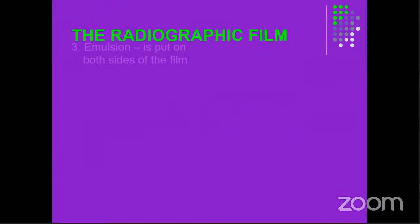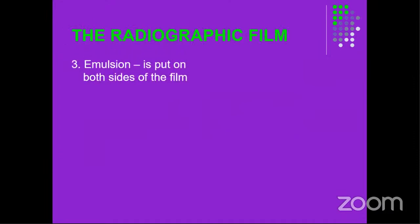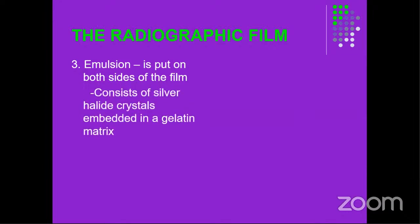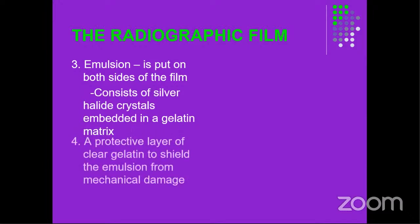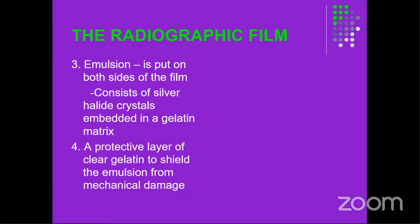Component number three is the emulsion. It is put on both sides of the film and consists of silver halide crystals embedded in a gelatin matrix. Fourthly, there is a protective layer of gelatin that protects the emulsion from any mechanical damage. You must protect it because that is where the image forms — if it is destroyed or damaged, you will not form an image, or you will see errors on those images.